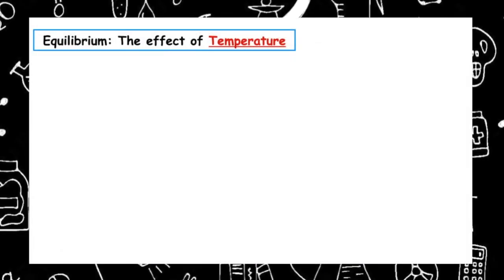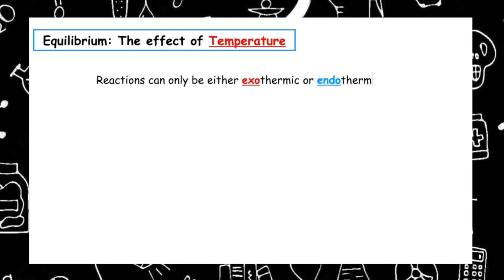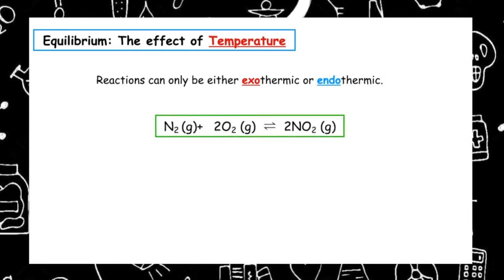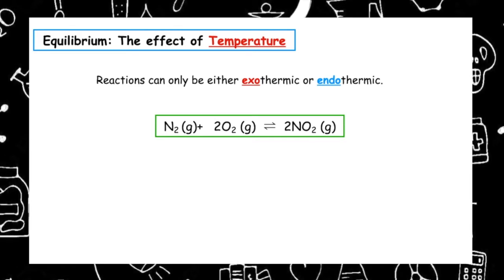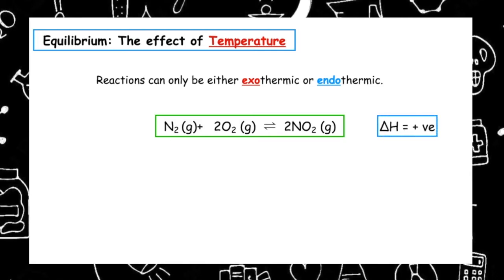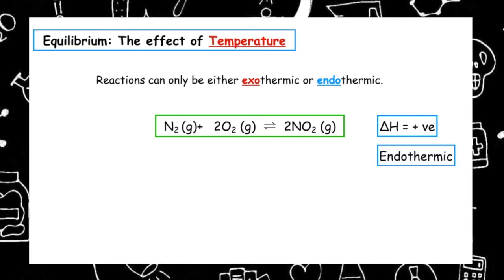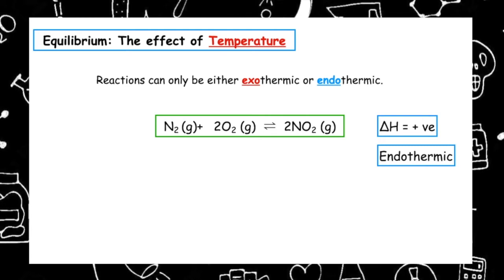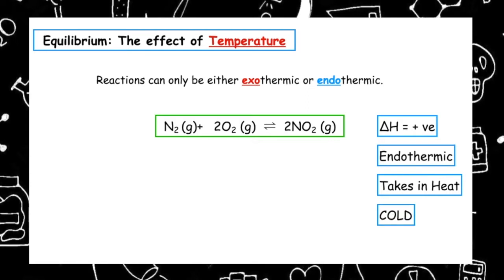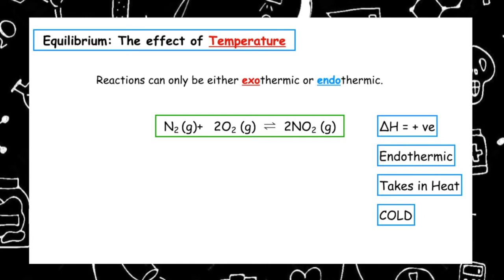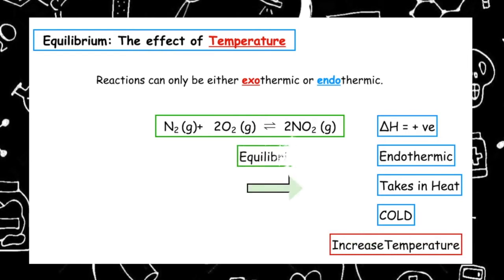The first factor we're going to look at which can affect the position of equilibrium is temperature. Reactions can only be either exothermic or endothermic. Here we have a reversible reaction shown by the double-headed arrow. If the forward reaction — with nitrogen dioxide as the product — has a positive enthalpy, it is endothermic. Endothermic reactions take in heat energy, making the reaction cold, so we increase the temperature to shift equilibrium to the right and make more product.